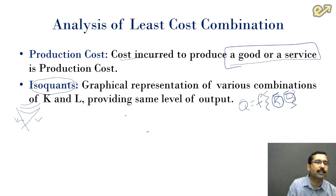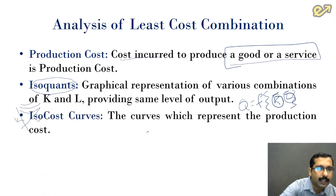One more factor that we have to understand is the isocost curves. The curves which represent the production cost. Here the word iso means same, so the curves will look something like this. If this is the X-axis and the Y-axis, the curves will be straight lines, and they are the isocost curves.